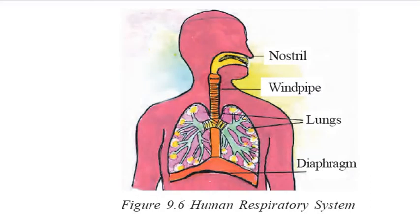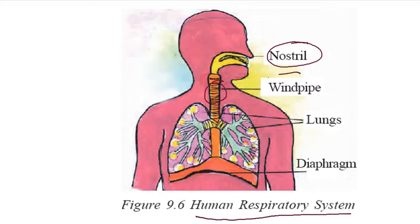Now it is the human respiratory system. First, what is the nostril line? The nostril leads to the windpipe, and then the lungs. This is the diaphragm.